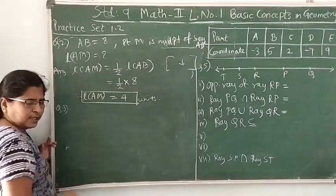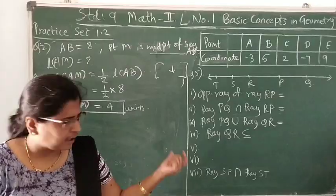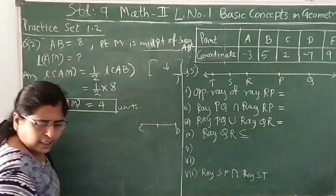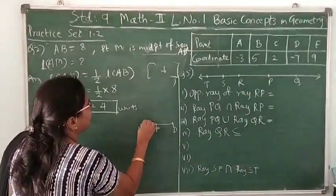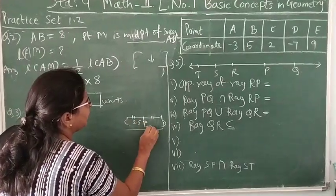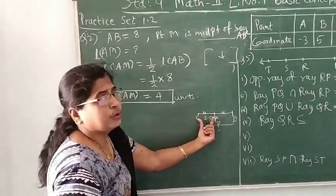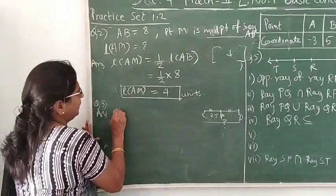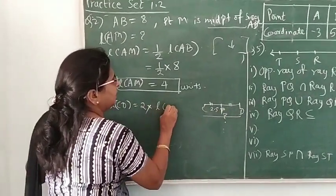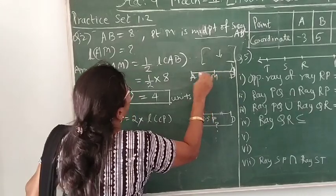Now question number 3 is similar to this. Point P is midpoint of segment CD. CP is 2.5, find length CD. You can draw a rough figure for your understanding: P is midpoint of CD. Draw CD and P is the midpoint. If you draw the rough figure and put the values here, CP is given 2.5, then you have to find the length of CD.